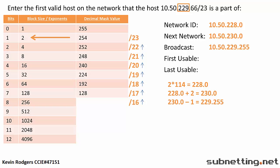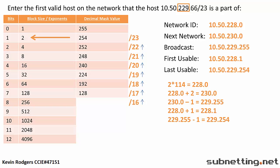To find the first usable IP on our network, we take our network ID and add 1. Our first usable IP is 10.50.228.1. And finally, we will also find the last IP, which is our broadcast address minus 1. Our last usable IP is 10.50.229.254.